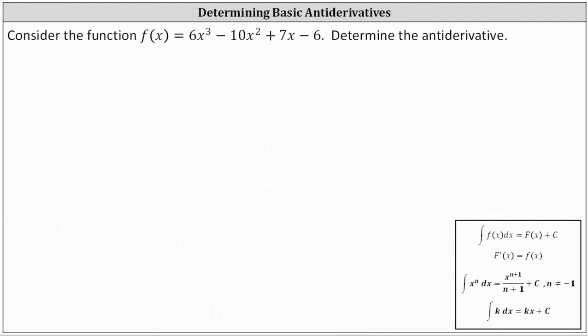Consider the function f(x) = 6x³ - 10x² + 7x - 6. Determine the antiderivative. To determine the antiderivative, we are looking for the family of functions whose derivative is equal to the given function f(x). When looking for an antiderivative, we can also express this as an indefinite integral.